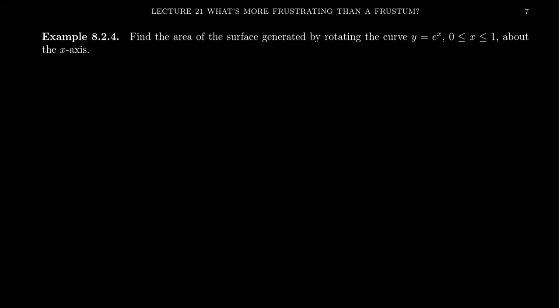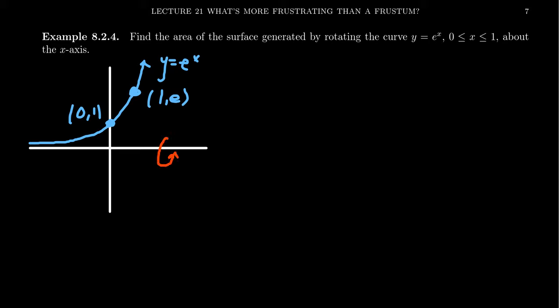If we try to look at this picture, we have our exponential curve y equals e to the x. We want to go from x equals 0 to x equals 1. So we have (0,1) as a point and (1,e) as a second point. We want to take this curve and rotate it around the x-axis. Drawing a typical radius will look something like this. Notice we're just looking for the y-coordinate of the function.